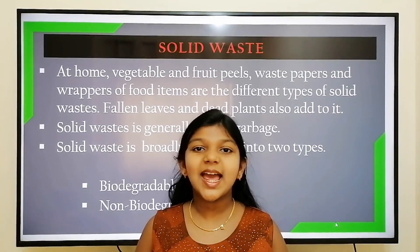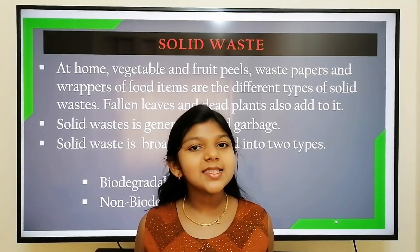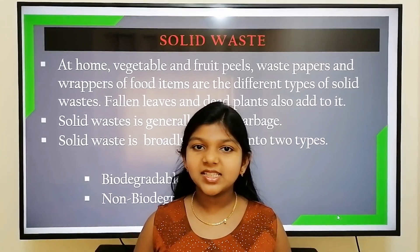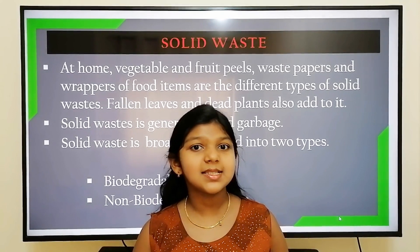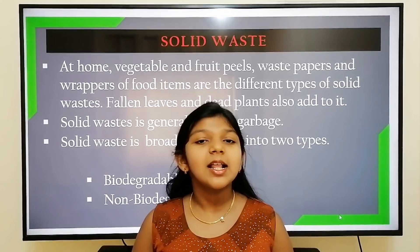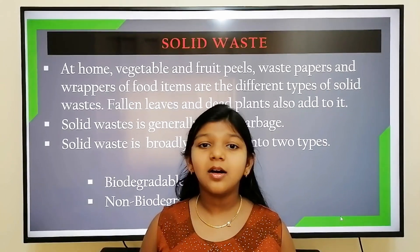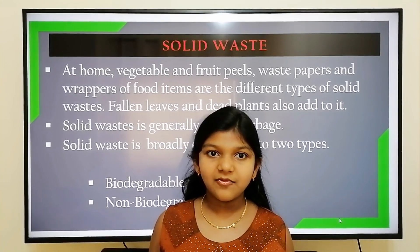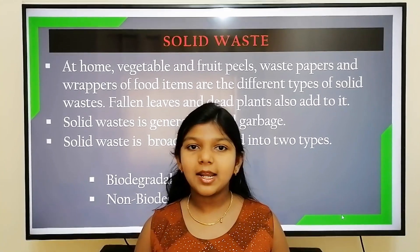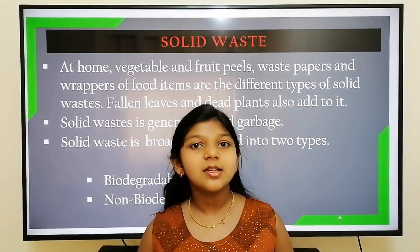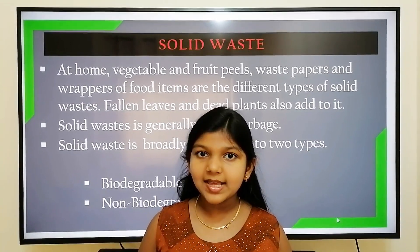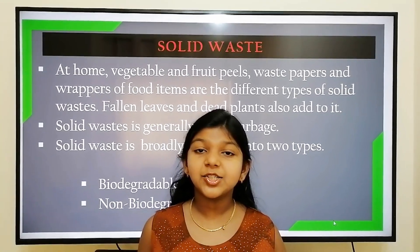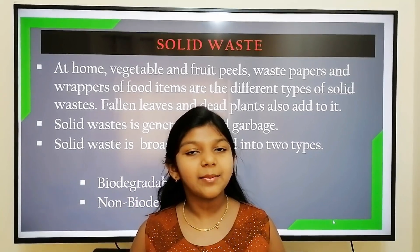Waste is broadly classified as solid waste, liquid waste, and gaseous waste. Now let's see about solid waste. At home, vegetable and fruit peels, tins, cans, wrappers, leftover food, and waste paper are some of the different types of solid waste. Fallen leaves and dead plants also add to it. Solid waste is generally known as garbage.